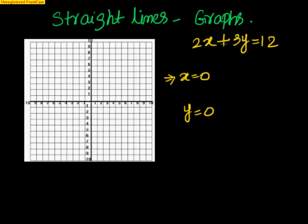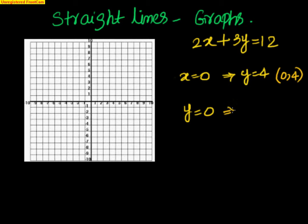If I keep x equal to 0, then 3y equals 12, which gives me y equal to 4. So the coordinate is (0, 4). Now suppose I keep y equal to 0, then 2x equals 12, which gives me x equal to 6. So the coordinate is (6, 0).